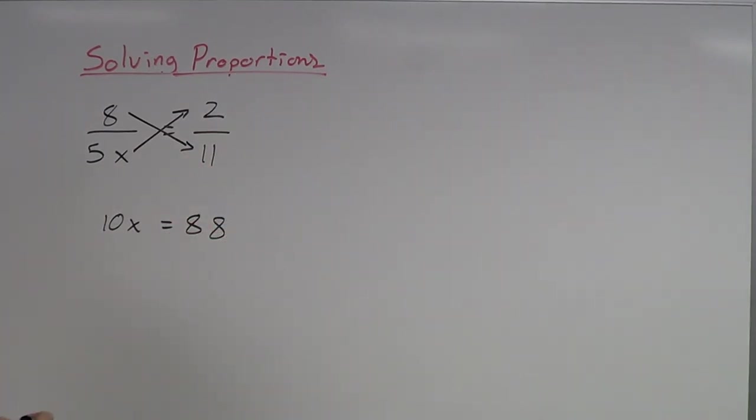Now one question I usually get when solving this is, does it matter what order you do it? No, not really. I can take 5x times 2, and I can do that first. Or I could have done 8 times 11. I could have done that first. And so then it would have been 88 equals 10x. But it really honestly doesn't make a difference which order I have it. It's either 88 is on the left or on the right.